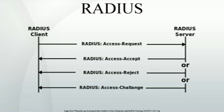The RADIUS attribute-value pairs (AVPs) carry data in both the request and the response for the authentication, authorization, and accounting transactions. The length of the RADIUS packet is used to determine the end of the AVPs. RADIUS is extensible; many vendors of RADIUS hardware and software implement their own variants using vendor-specific attributes (VSAs). Microsoft has published some of their VSAs. VSA definitions from many other companies remain proprietary or ad hoc, nonetheless many VSA dictionaries can be found in the source code of open-source RADIUS implementations, e.g., FreeRADIUS or OpenRADIUS.